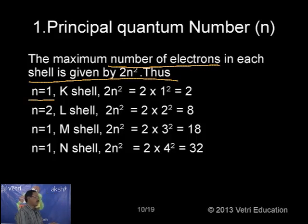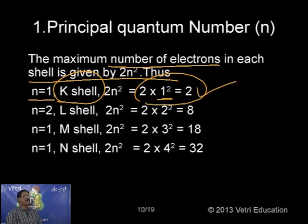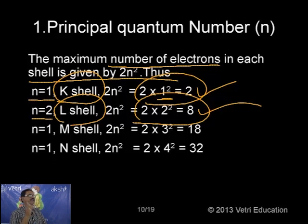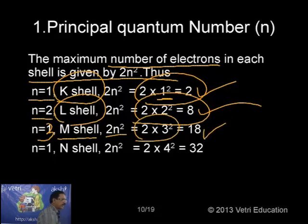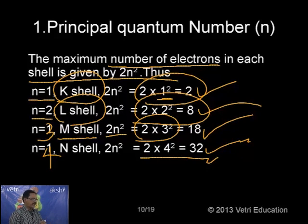Using 2n²: when n = 1 (K shell), maximum electrons = 2×1² = 2. When n = 2 (L shell), maximum electrons = 2×2² = 8. When n = 3 (M shell), maximum electrons = 2×3² = 18. When n = 4 (N shell), maximum electrons = 2×4² = 32. So the first level holds 2, second holds 8, third holds 18, and the fourth holds 32 electrons maximum.